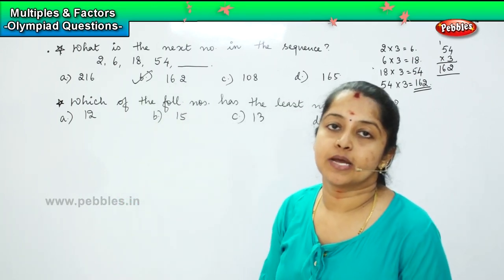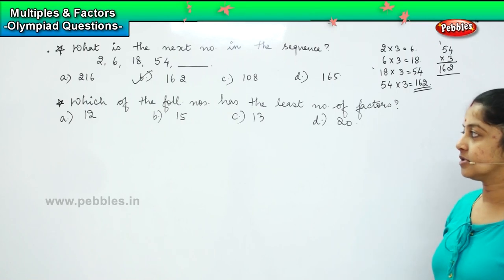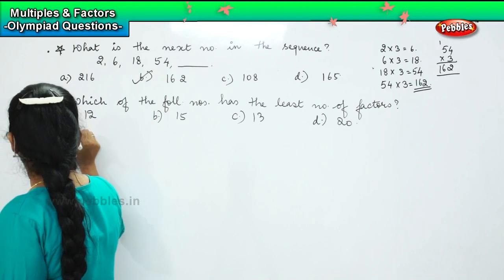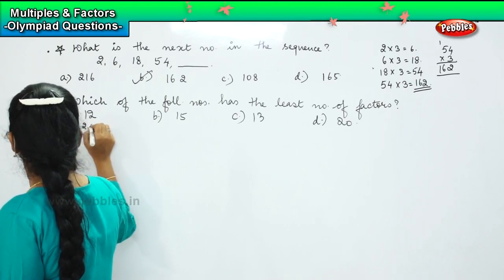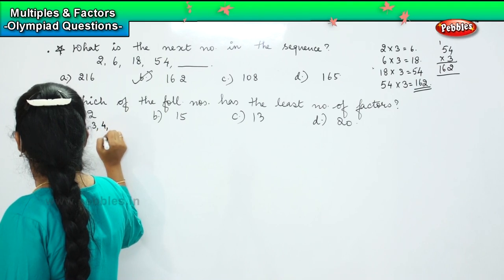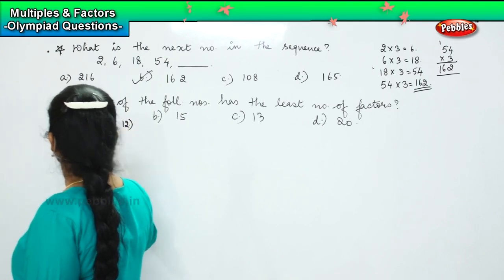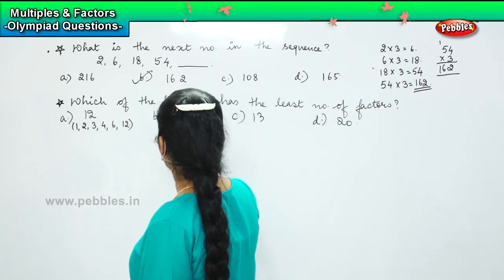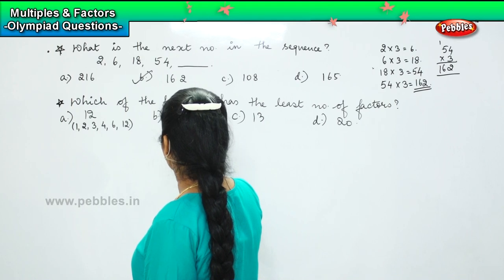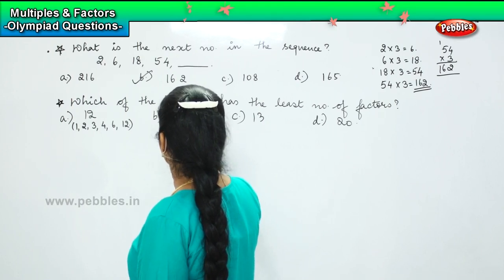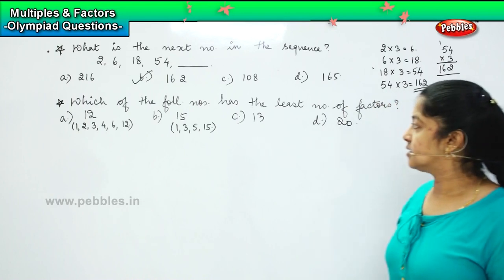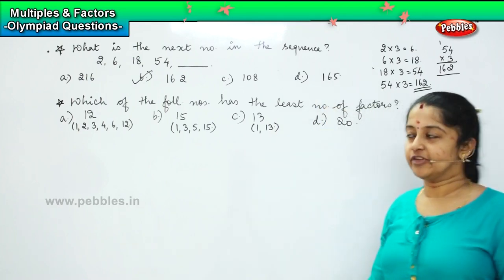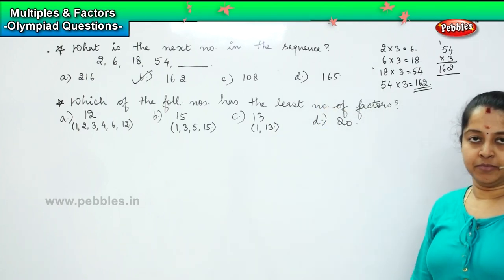The question is asking which number has the least number of factors. Coming to 12, the factors are 1, 2, 3, 4, 6, and 12. The factors of 15 are 1, 3, 5, and 15. The factors of 13 are just 1 and 13 — only two, which means that it is a prime number.